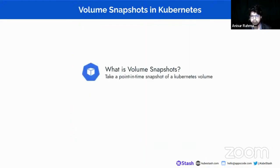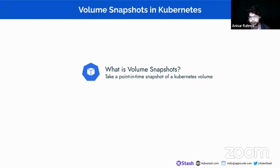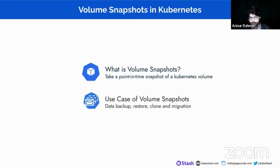In this slide, I am talking about volume snapshots in Kubernetes. The first topic I will describe is what is volume snapshots. In Kubernetes, a volume snapshot is a feature that allows users to take a point-in-time snapshot of a Kubernetes volume. A use case of volume snapshots is that we can capture the content of a persistent volume at a specific moment in time so that we can back up a volume using volume snapshots.